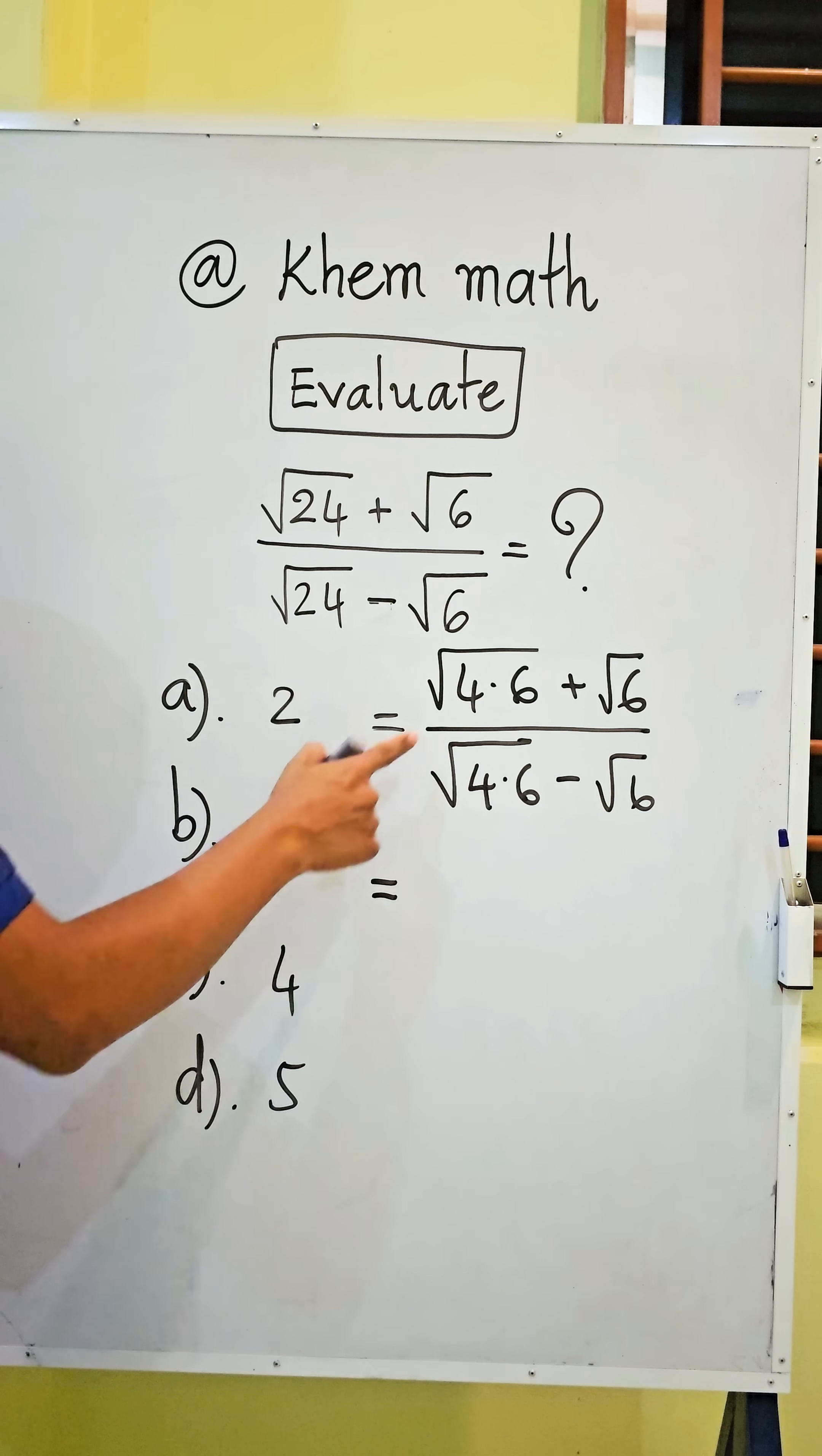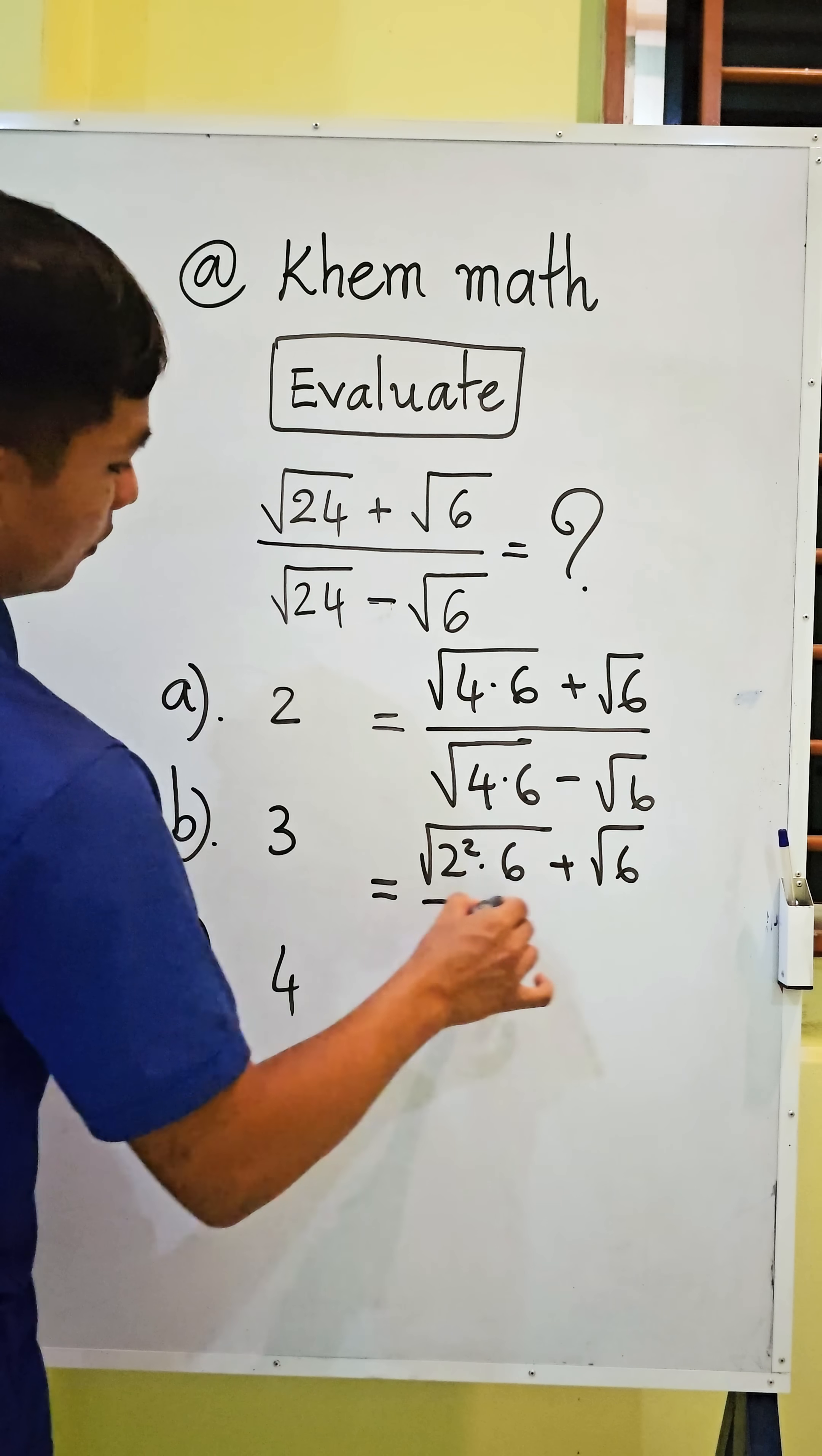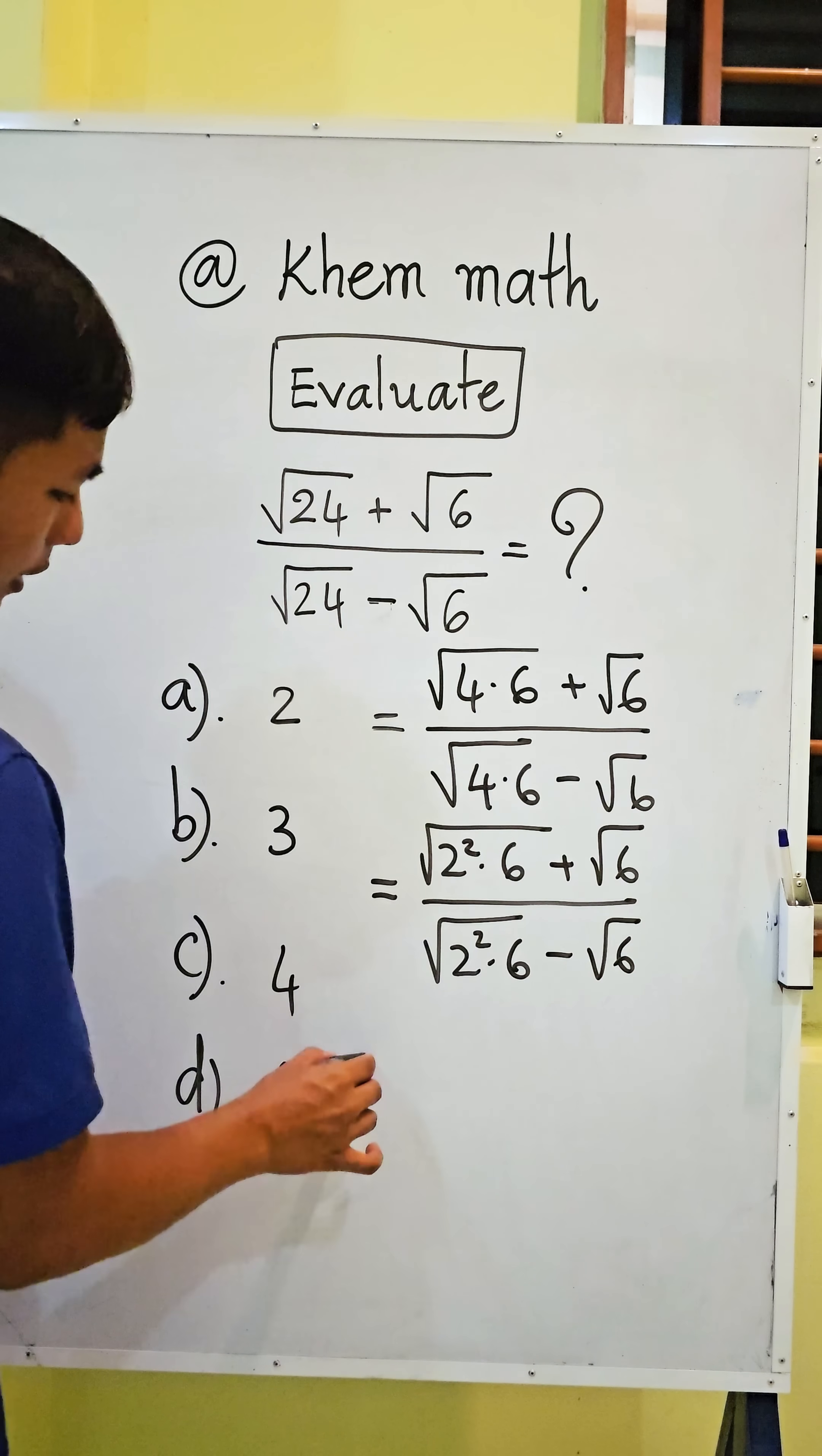This equals square root 2 squared times 6 plus square root 6, divided by square root 2 squared times 6 minus square root 6.